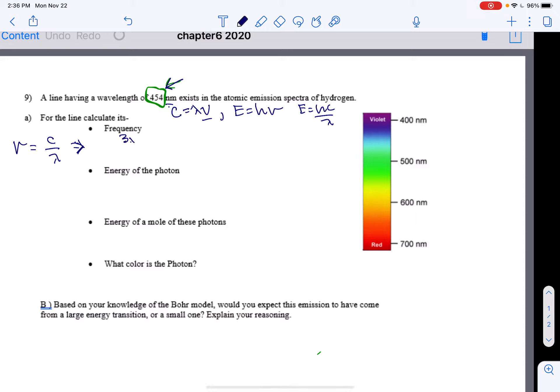So 3 times 10 to the 17th is the speed of light. The wavelength I should say was given to me in the problem, so it's 454. I type that into my calculator, and you end up with 6.61 times 10 to the positive 14th.